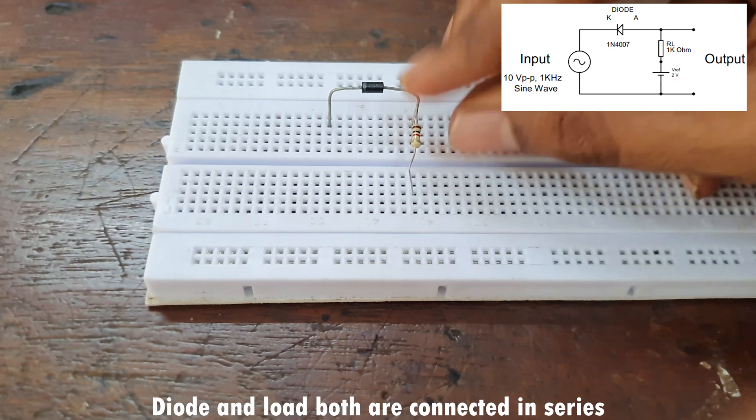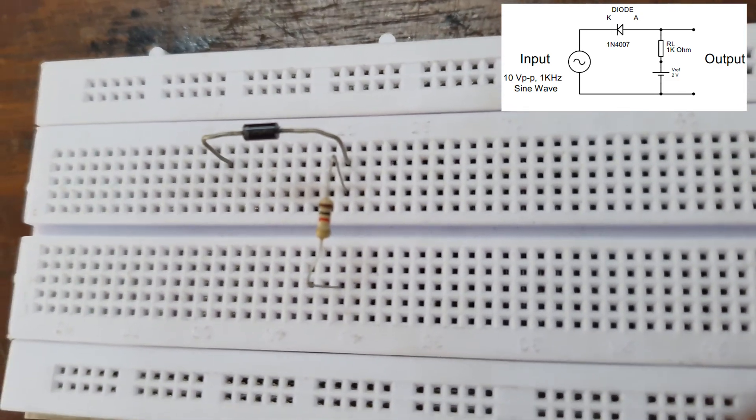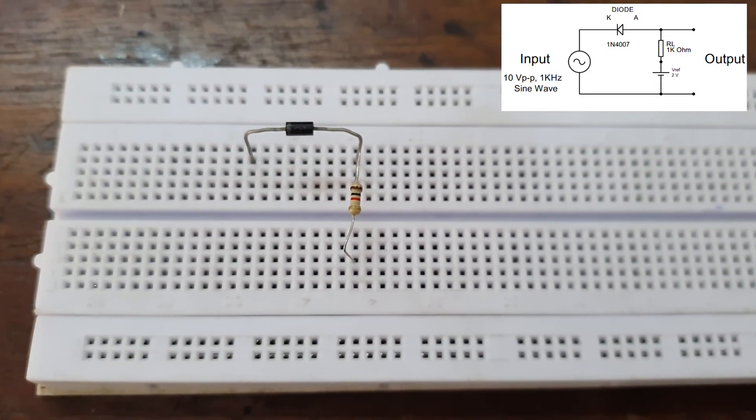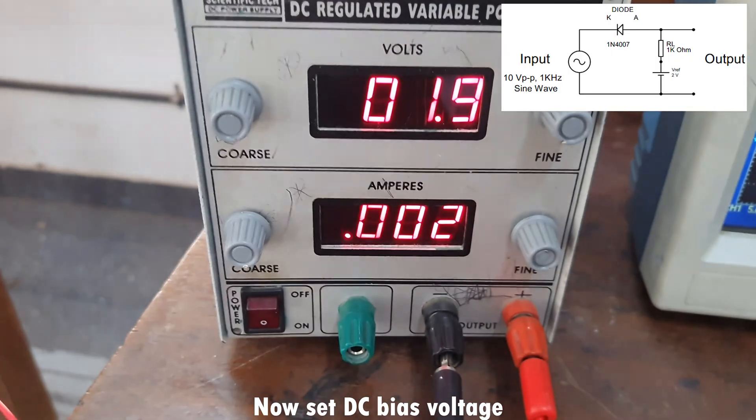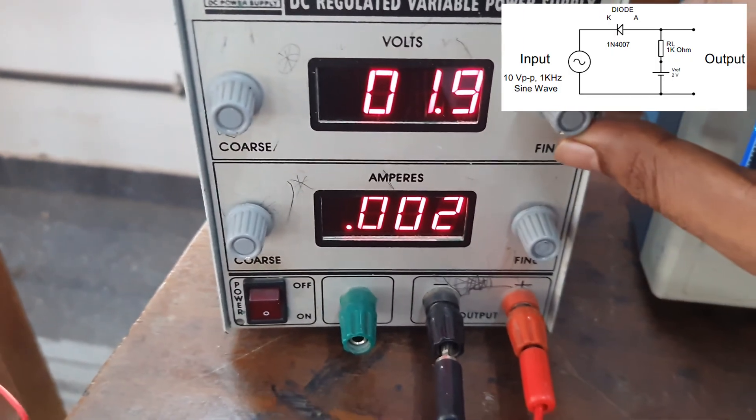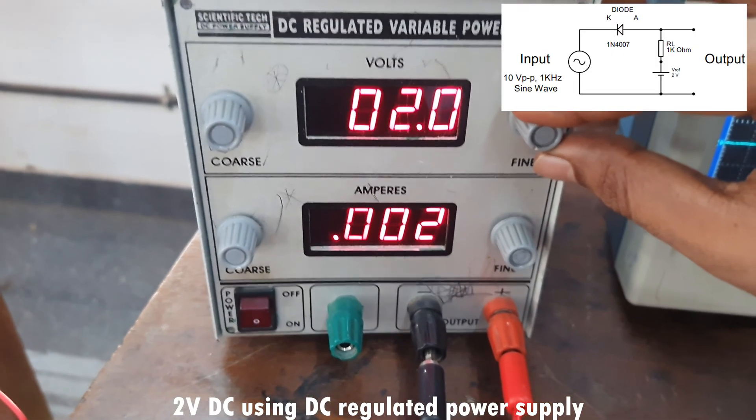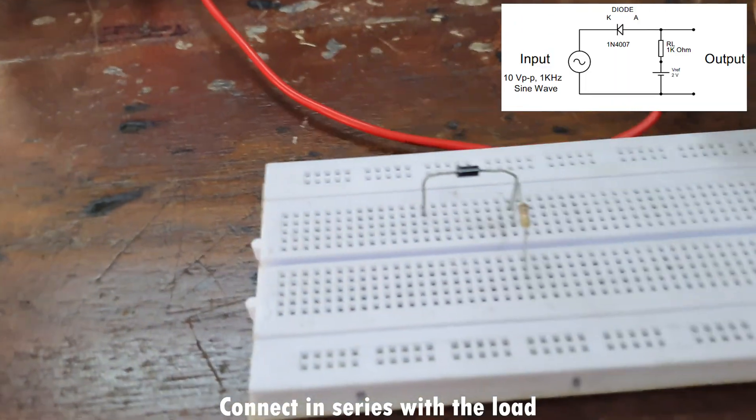Also connected in series with the load resistor. This is a positive clipper, so the positive part of the input waveform will be removed using this circuit. Set a DC voltage of 2 volts which is the biasing voltage to this circuit.